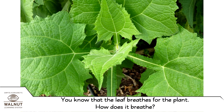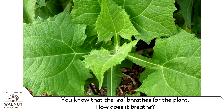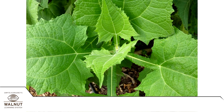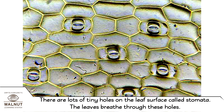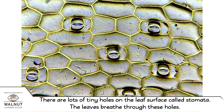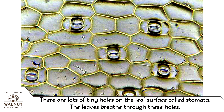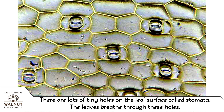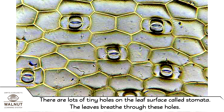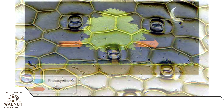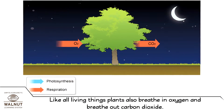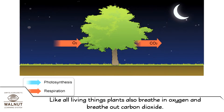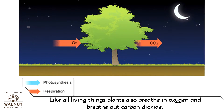You know that the leaf breathes for the plant. There are lots of tiny holes on the leaf surface called stomata — the leaves breathe through these holes. Like all living things, plants also breathe in oxygen and breathe out carbon dioxide.